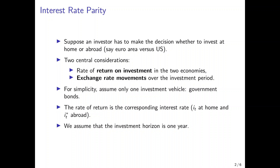This investor has basically two central considerations for this investment. The first is the rate of return on investment in the two economies — how much the investment yields if the investor invests in the US and in the Euro area. The second consideration is how exchange rates are expected to move between the two areas over the course of the investment period.